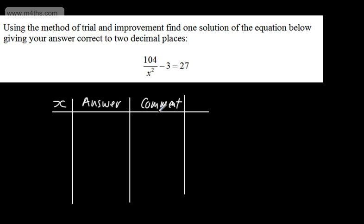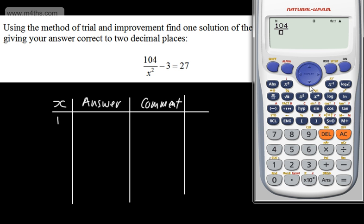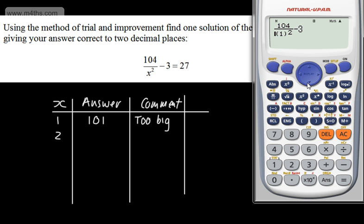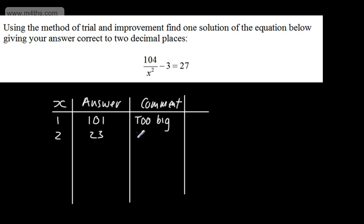So I'm going to try x equals 1 and x equals 2 to begin with. I'll set this up on the calculator as 104 divided by the bracket squared, then subtract 3. Putting in x equals 1 gives me 101 — clearly this is too big. I'm now going to try x equals 2. Substituting 2 gives me 23, so we can say 23 is too small. The answer for one of the solutions is going to be between 1 and 2.